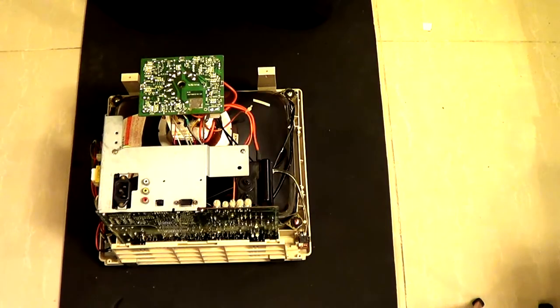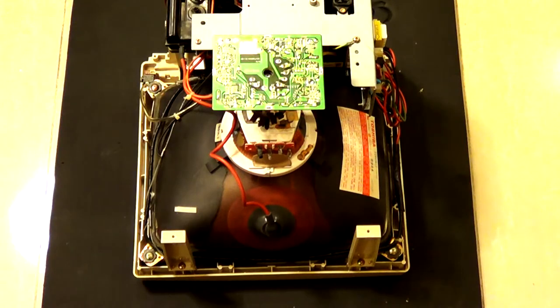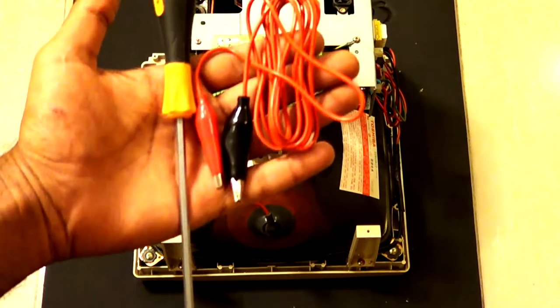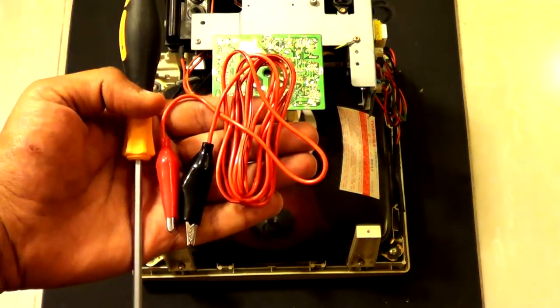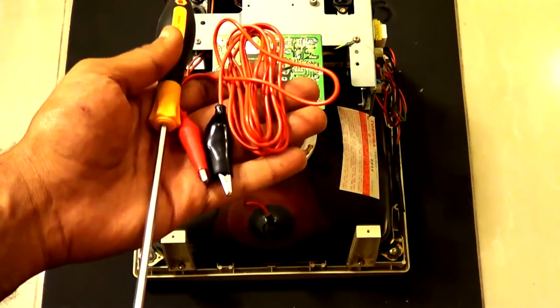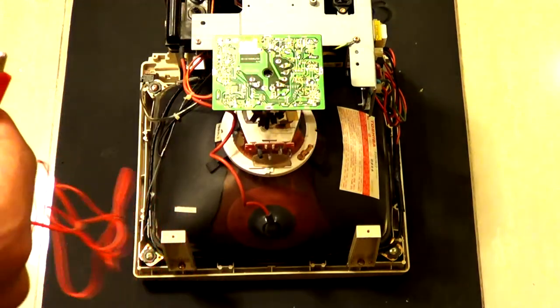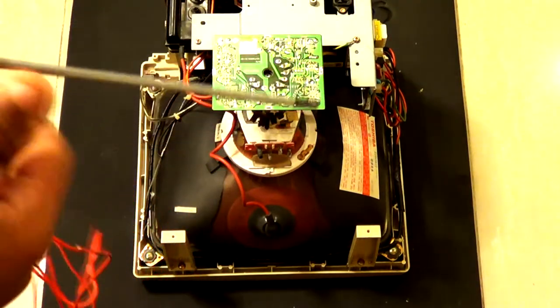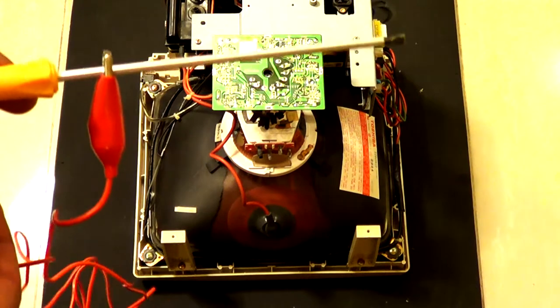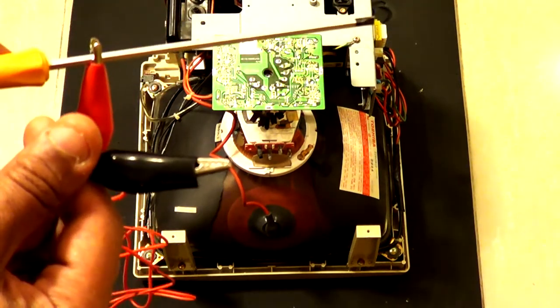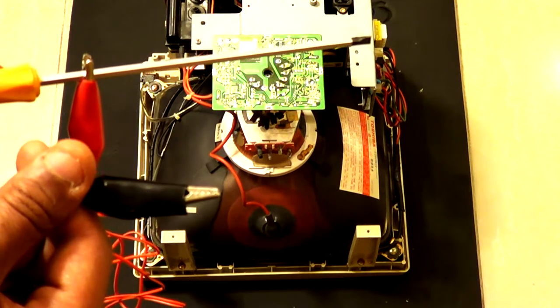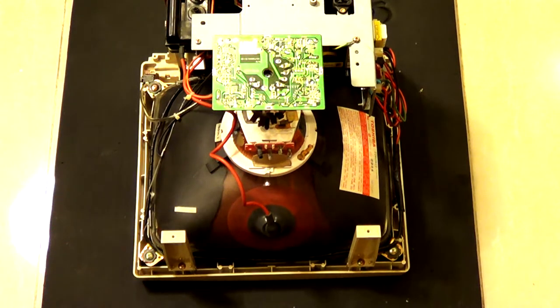Before we go any further, we need to go ahead and discharge this CRT monitor. For this, you'll need a flat head screwdriver, and a pair of alligator clips with a solid wire that are connected to each end of the clips. Take one end of the alligator clip, and clip the first one to the flat head screwdriver, like so. As for the other end of the alligator clip, we need to make sure that we clip that to any grounded surface on our CRT monitor.